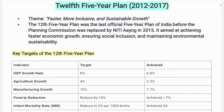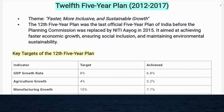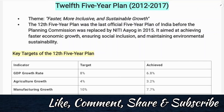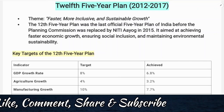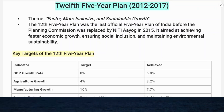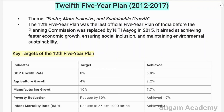Hello everyone. In this class we are going to discuss the 12th Five Year Plan, which was from 2012 to 2017. This is from Indian Economy for Plus Three, Third Semester. The main objective of the 12th Five Year Plan was faster, more inclusive, and sustainable growth.